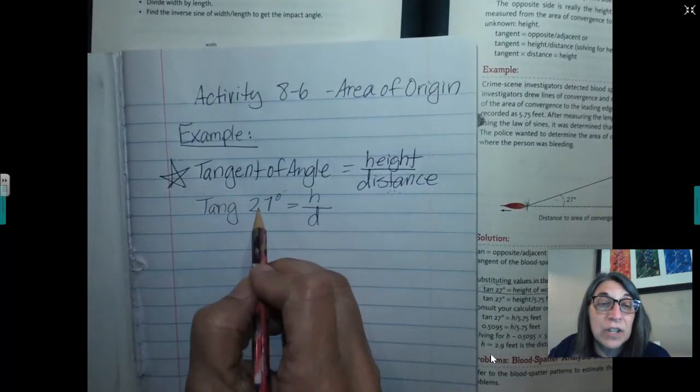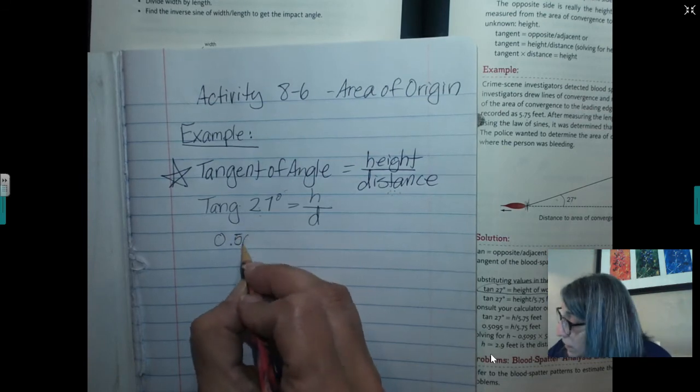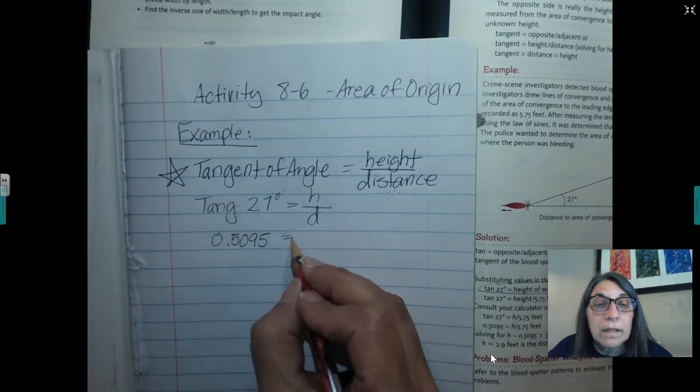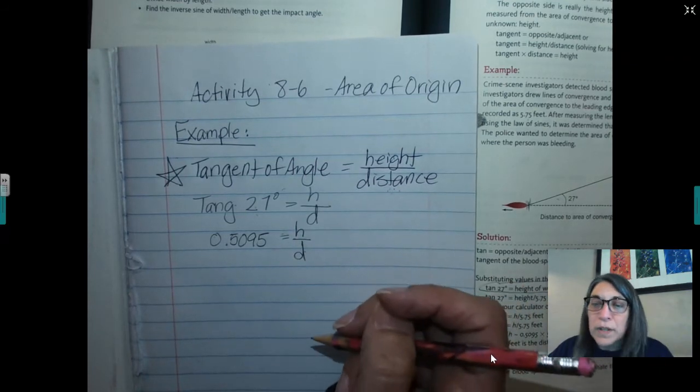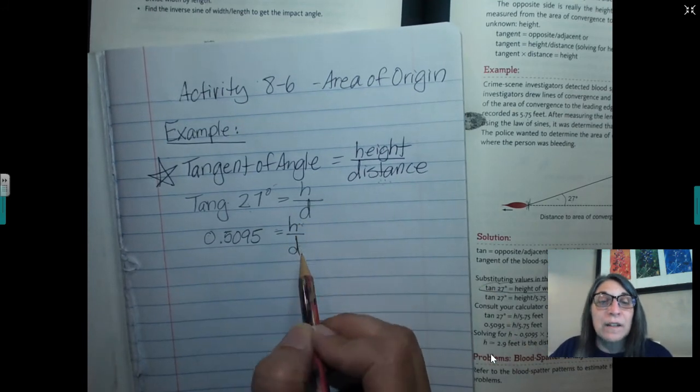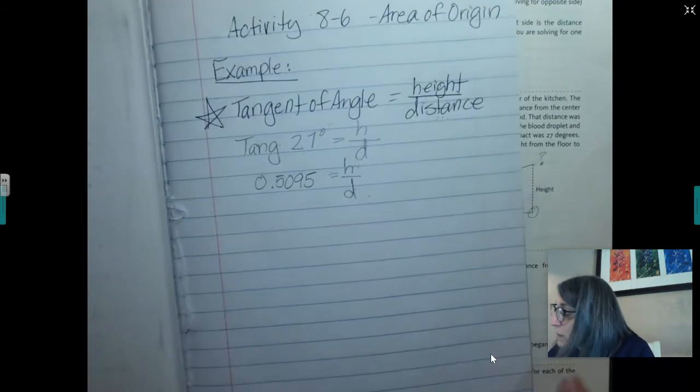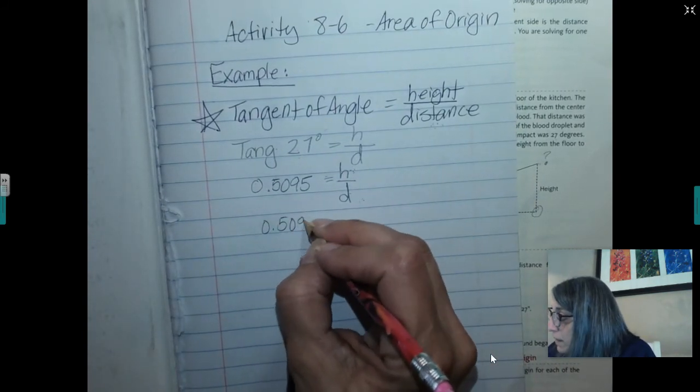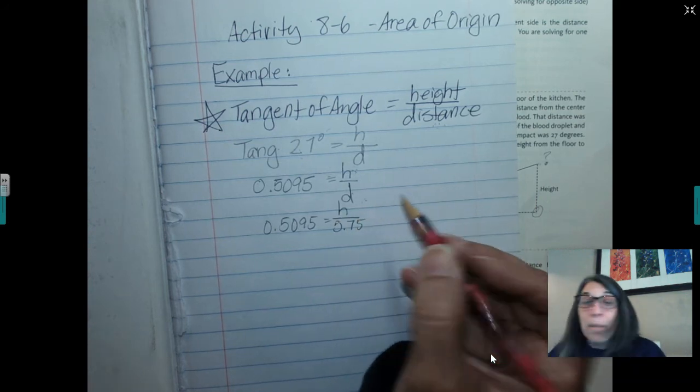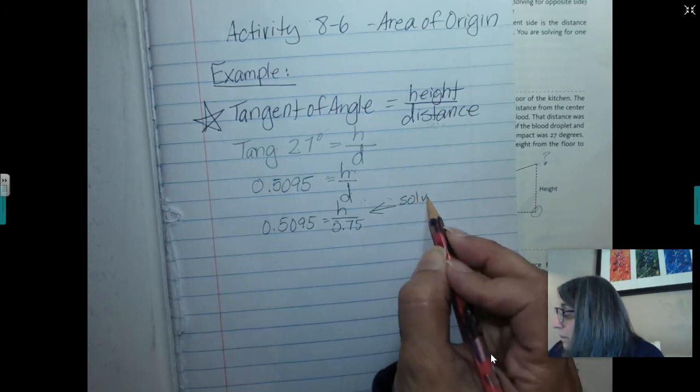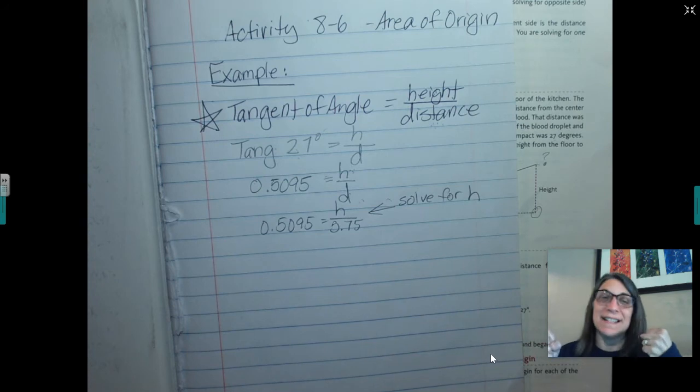So I'm going to go back and fill that in. Now the tangent of 27 degrees, according to the table that I just looked up in the back of the book is 0.5095. And then I'm going to keep my formula going. Do we know the height? No, that's what we're trying to find. Do we know the distance? Yes. They gave us that in the example. They said the distance was recorded as 5.75 feet. So now I'm going to rewrite my equation one more time. I still don't know height, but I know that my distance now is 5.75. So now basically the last thing you do, and this is fun math, you're just going to solve for H.